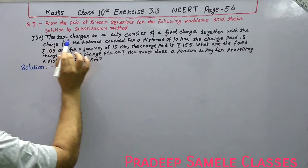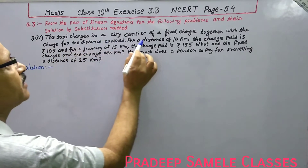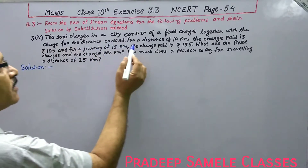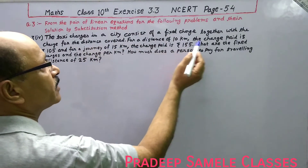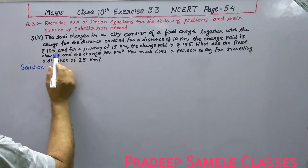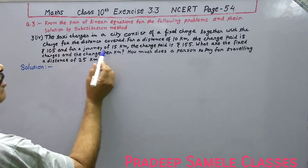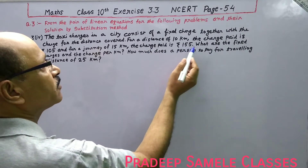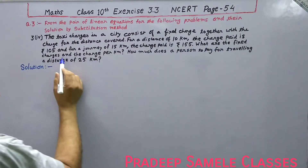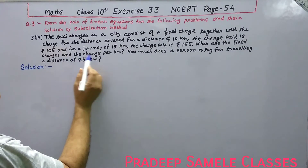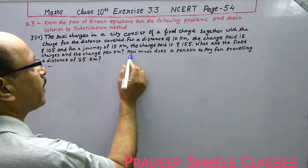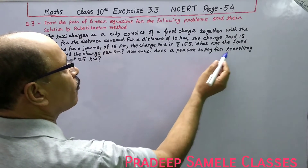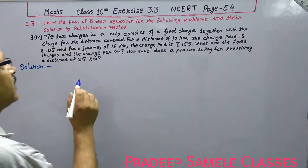The fourth part: taxi charges in a city consist of fixed charges together with a charge for the distance covered. For a distance of 10 km the charge paid is Rs. 105, and for a journey of 15 km the charge paid is Rs. 155. What are the fixed charges and the charge per km? And how much does a person pay for travelling a distance of 25 km?